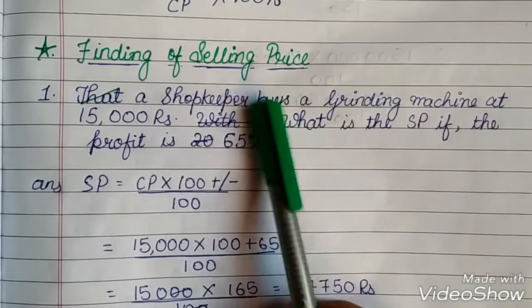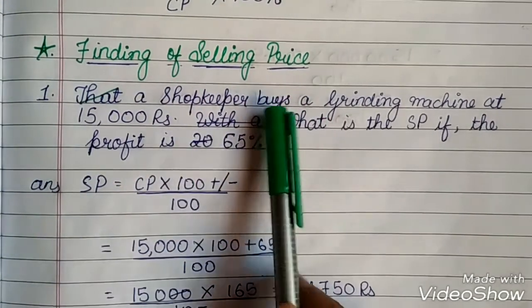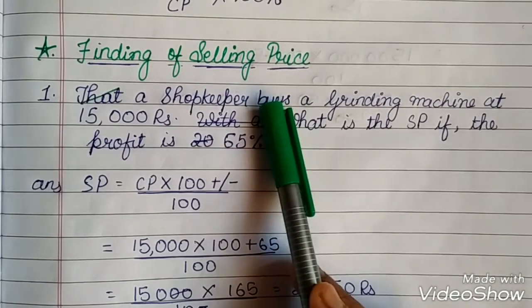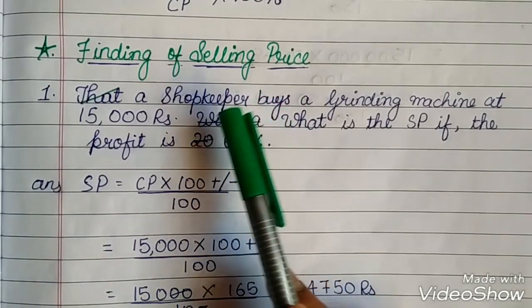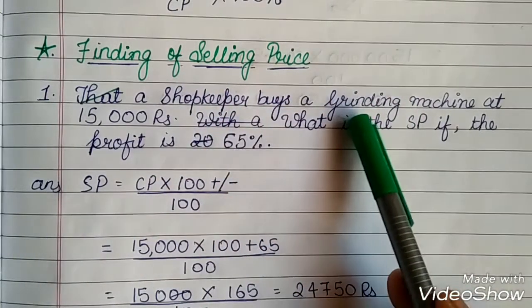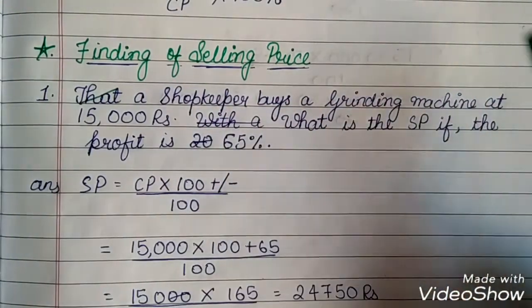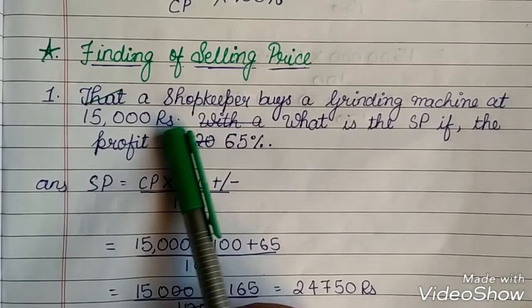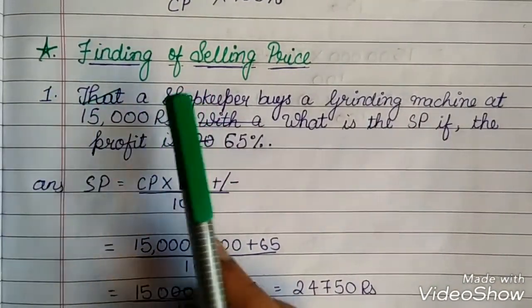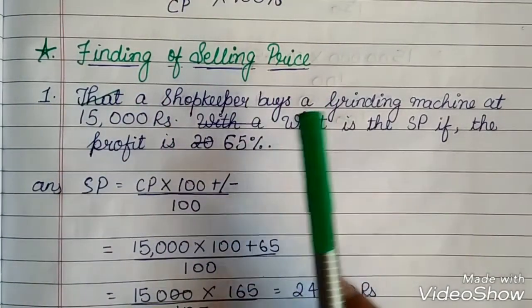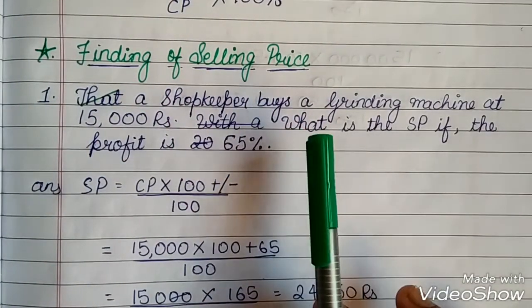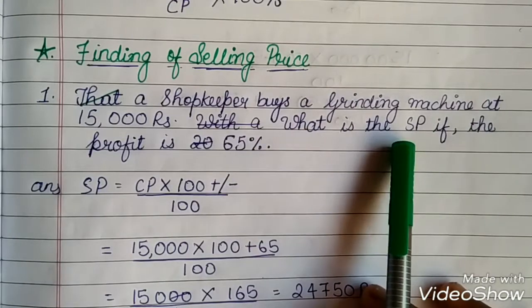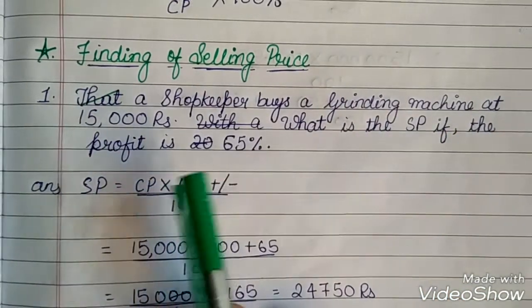Here, it buys. It is buys. Means that the shopkeeper buys a grinding machine at 15,000 rupees. So, the 15,000 rupees is the cost price. Then, the question is asked, what is the selling price if the profit is 65%?